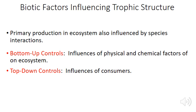Energy limitation plays a big role in determining trophic structure, but there are also biotic factors involved. When talking about factors affecting trophic structure, we distinguish bottom-up controls — the influence of physical and chemical factors on an ecosystem — and top-down controls, which is the influence of consumers.